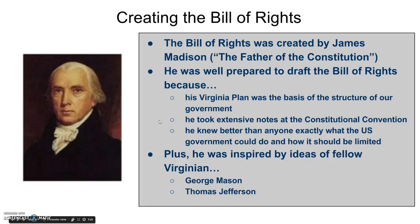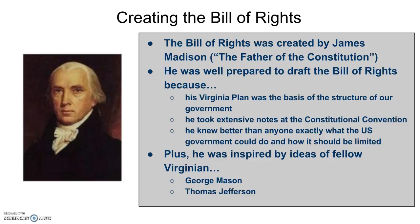At the Constitutional Convention, Madison not only attended but took extensive notes, providing us with the fullest record of what happened there. He had written down essentially all the thoughts and ideas discussed, so he knew better than anybody exactly what the government could do and what it should not be able to do. This made him well prepared to write the Bill of Rights. He also had inspiration from his Virginia neighbors — two important contemporaries, George Mason and Thomas Jefferson — whose ideas he used as inspiration when designing the Bill of Rights.